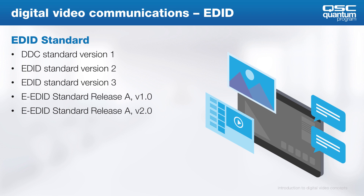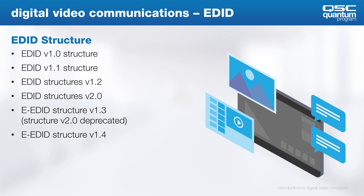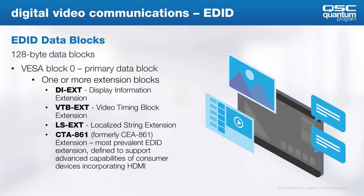Here is a quick look at the EDID standards available today. With structure, we still mainly use 1.3, but some 1.4 structures are starting to appear. The data blocks are what actually contain EDID information. The primary data block 0 is always required, and one or more extension blocks might exist as well. The most commonly found extension block is the CTA-861, which supports advanced capabilities of consumer devices that incorporate HDMI.